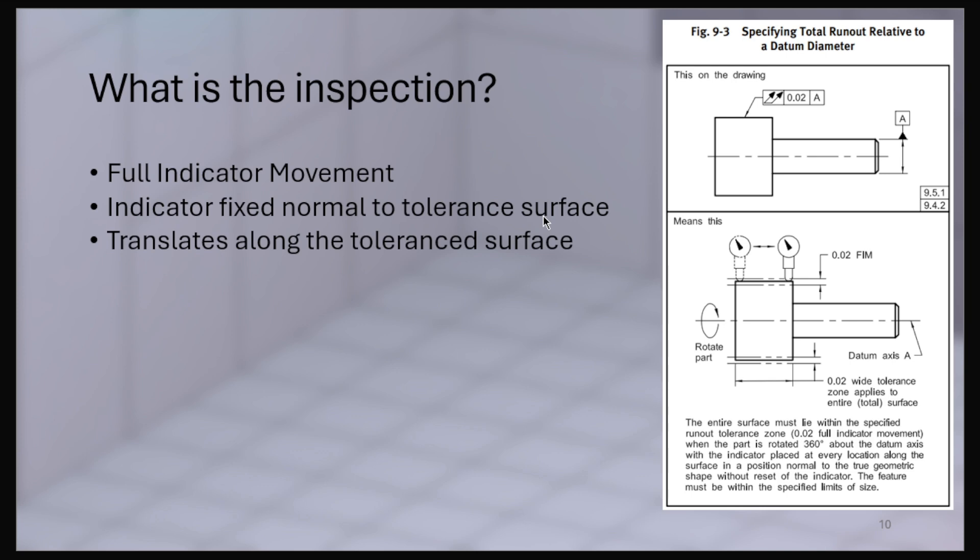So what would the inspection of this look like? Well, we need full indicator movement, and of course, the inspection shown in the standard, they don't mean this is the only way to inspect, but let's go forward using their version of this inspection just to illustrate how one might inspect a cone using total runout. So you need full indicator movement, you need the indicator fixed normal to the tolerance surface, and then the indicator must translate along the entire tolerance surface.